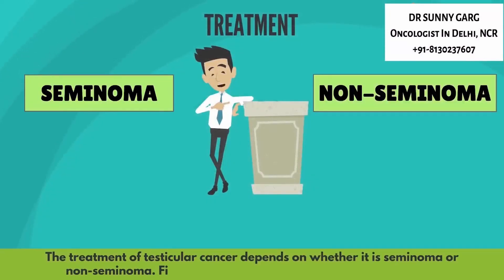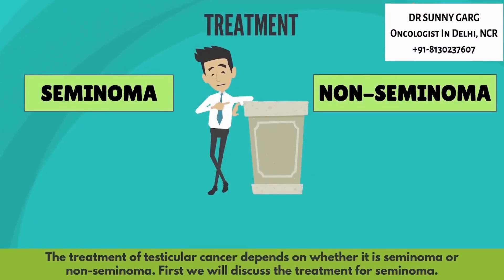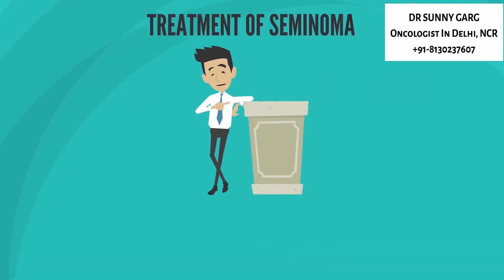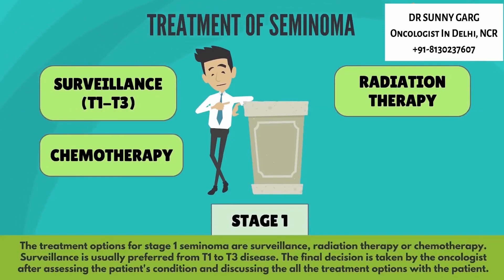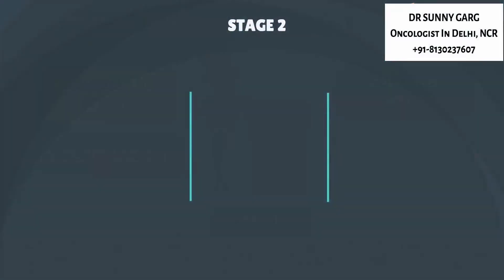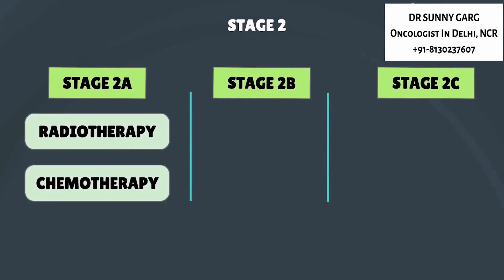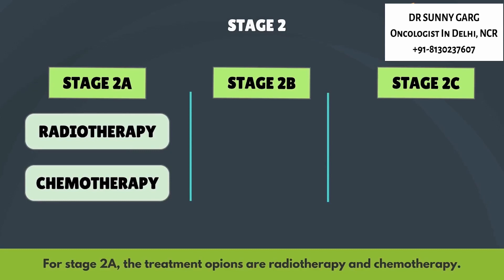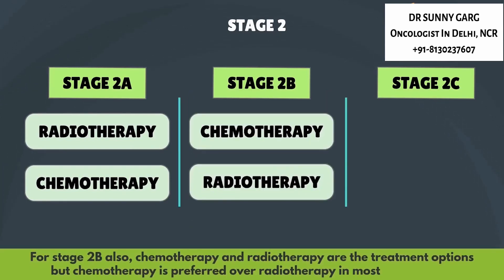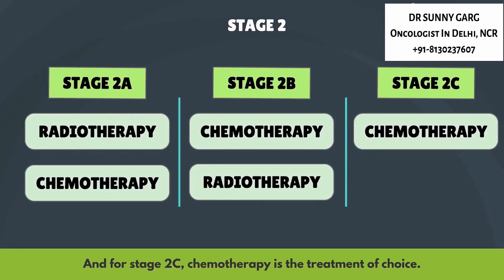The treatment for testicular cancers depends on whether it is a seminoma or non-seminoma. For stage 1 seminoma, the treatment options are surveillance, radiation therapy, or chemotherapy. Surveillance is usually preferred for T1 to T3 disease. For stage 2A seminoma, the treatment options are radiotherapy or chemotherapy. For stage 2B, chemotherapy and radiotherapy are both options but chemotherapy is preferred in most cases. For stage 2C, chemotherapy is the treatment of choice.